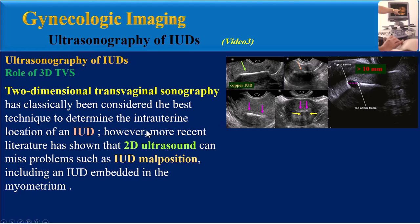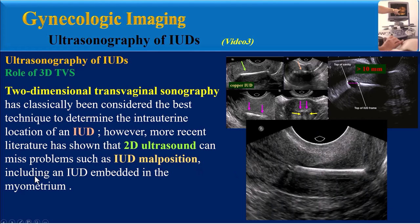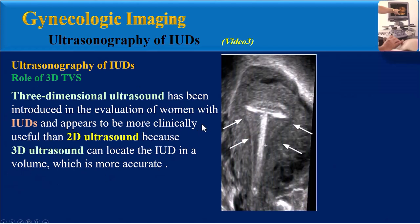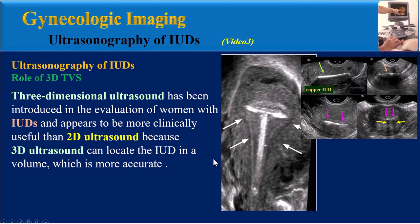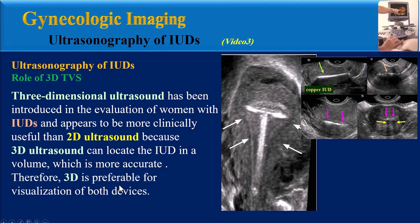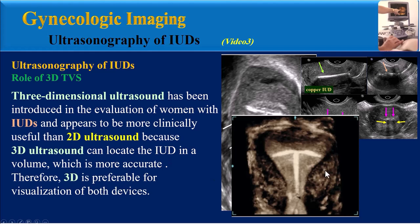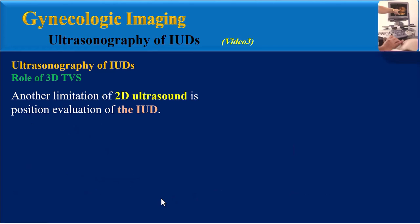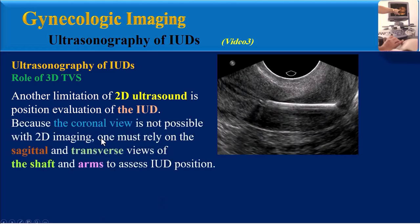Two-dimensional transvaginal sonography has classically been considered the best technique to determine the intrauterine location of an IUD. However, more recent literature shows that 2D ultrasound can miss problems such as IUD malposition, including an IUD embedded in the myometrium. Three-dimensional ultrasound has been introduced in the evaluation of women with IUDs and appears more clinically useful, because it can locate the IUD in a volume more accurately. Therefore, 3D is preferable for visualization of both copper and Mirena IUDs.